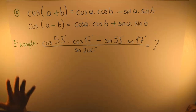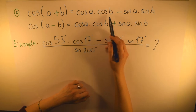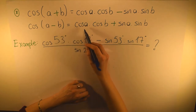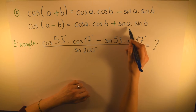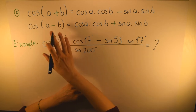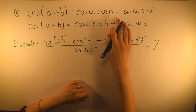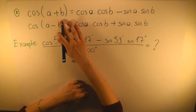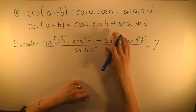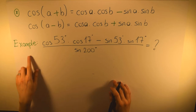Now let's see the formulas for cosine. Cosine(a+b) = cosine a · cosine b − sine a · sine b, and cosine(a−b) = cosine a · cosine b + sine a · sine b. For cosine, the cosine terms are grouped on one side and sine terms on the other, and the signs are opposite: if it's plus outside, it's minus inside, and vice versa.